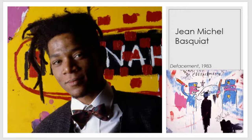During his career, Basquiat produced over 1,500 drawings and 600 paintings. These primarily consisted of acrylic and spray paints used in a graffiti-like manner over canvas and paper. This could reflect his background growing up with a low-income family in the inner city.